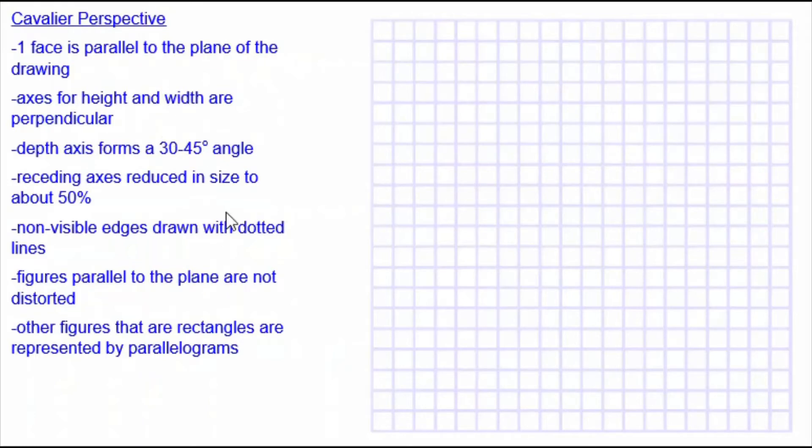The cube I'm going to draw has sides that are three centimeters in length. This graph paper has squares with sides that are half a centimeter in length. So representing three centimeters will cover six squares.